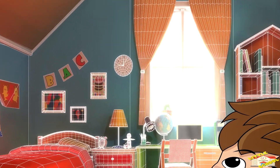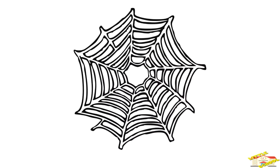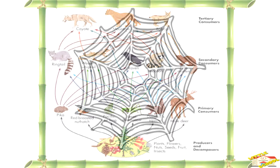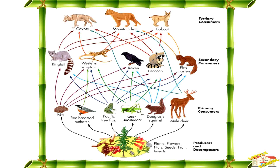Imagine a food web as a big spider web, but instead of being made of silk, it's made up of plants and animals. They are all connected to each other by who eats what.